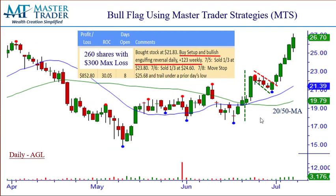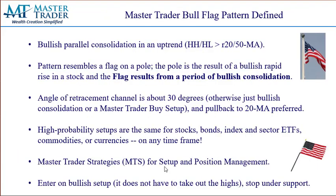Here's an example we gave to our subscribers a week or so ago. Here is just a picture of a flag pattern. A flag is a bullish parallel retracement, which is a consolidation. The reason they call it this is it resembles a flagpole — it went up, and then it's going to be a bullish move. The flag results from a period of bullish retracement consolidation in a little trend channel. As a rule of thumb, I'm wanting about a 30% retracement; otherwise it might just be a pullback, not a compelling pattern. But these things just jump out at you.